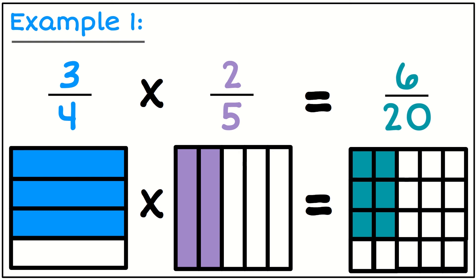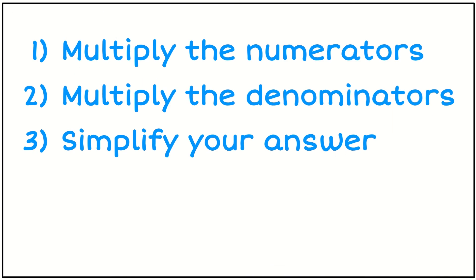Then the denominators: four times five is equal to twenty. So that leads us to this pattern: multiply the numerators, multiply the denominators.